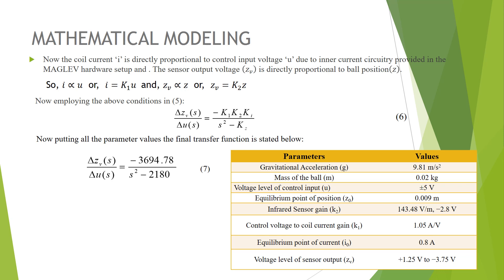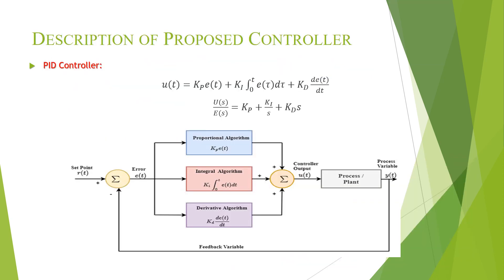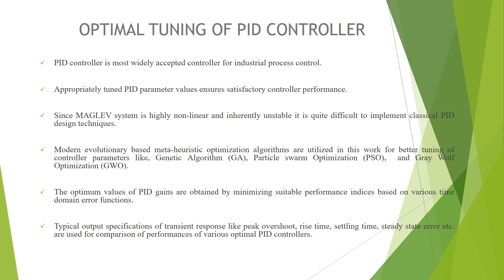Looking at the transfer function, it can be concluded that there is one pole of the system in the right-hand side of the s-plane and another pole in the left-hand side. The presence of the pole in the right-hand side s-plane makes the system highly unstable. To stabilize the plant and control the pole position, a PID controller is used. The PID controller has three control parameters: the proportional gain Kp, the integral gain Ki, and the derivative gain Kd. The PID controller is the most widely accepted controller in industrial process control. However, since the magnetic levitation system is highly non-linear and inherently unstable, the classical PID tuning techniques will fail to provide good performance.